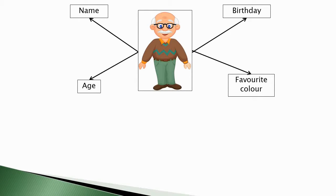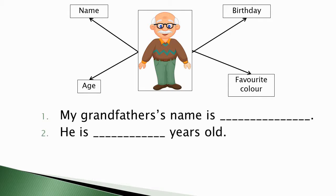Now that you have the ideas, you need to make a sentence based on it. So the first idea is name. So my grandfather's name is blank. The second idea is age. So the sentence is, he is blank years old.